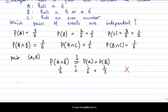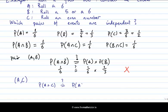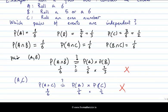Let's look at the pair A and C. Is rolling a 6 independent of rolling an even number? We ask: is P(A ∩ C) equal to P(A) times P(C)? The probability of A and C is 1/6. P(A) is 1/6 and P(C) is 1/2. Again, this is false — 1/6 does not equal 1/12. So rolling a 6 and rolling an even number are not independent.